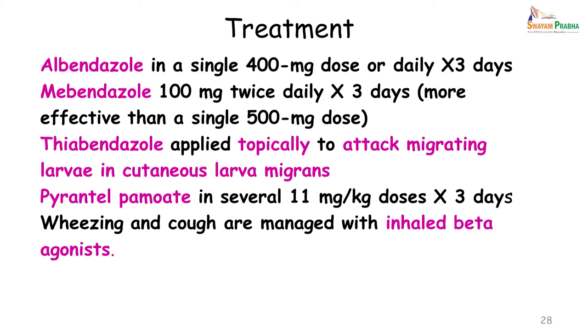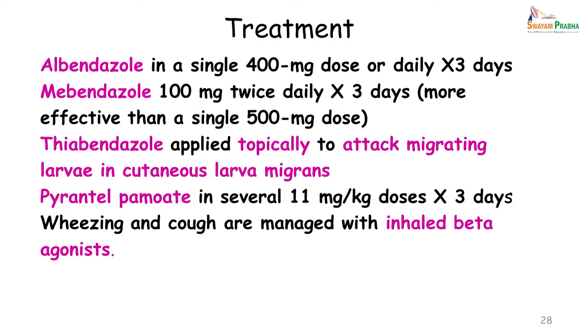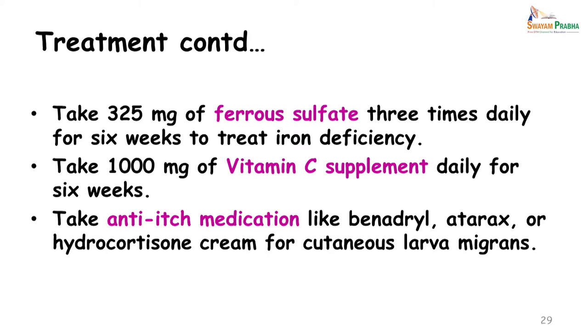Thiabendazole creams may be applied topically to address migrating larvae in cutaneous larva migrans. Pyrantel pamoate may also be given to treat hookworm infestations. Wheezing and cough are managed with inhaled beta-agonists. When a patient presents with hookworm infestation — usually anemic — it is important to elicit a history of skin lesions such as urticarial or serpiginous rash, followed by pulmonary symptoms like a dry cough, to identify the hookworm cause. In addition to eliminating the worms, we must treat the patient's anemia, give vitamin C supplements, and anti-itch medications like Benadryl, Atarax, or hydrocortisone cream for cutaneous larva migrans.